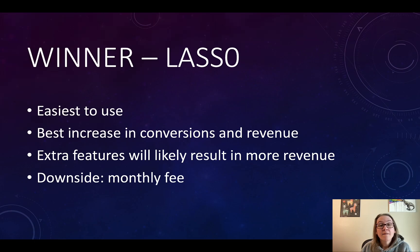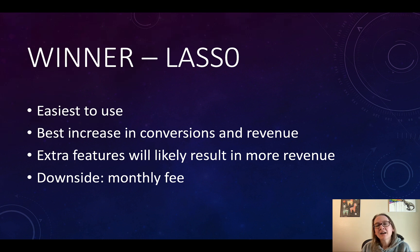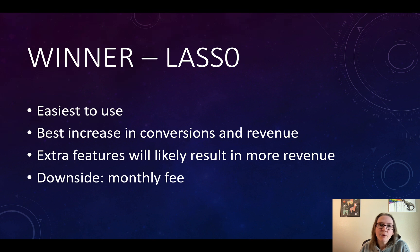At the end of the day, in my testing I found that across the board, Lasso was the winner. It was the easiest to use, I saw the best increase in conversions and revenue from using it, and it had extra features that I think will result in even more revenue as I use them more. The downside of Lasso is that it is a monthly fee instead of a one-time payment — though by being a monthly fee, that may actually prevent me from having a similar problem as I had with AAWP.